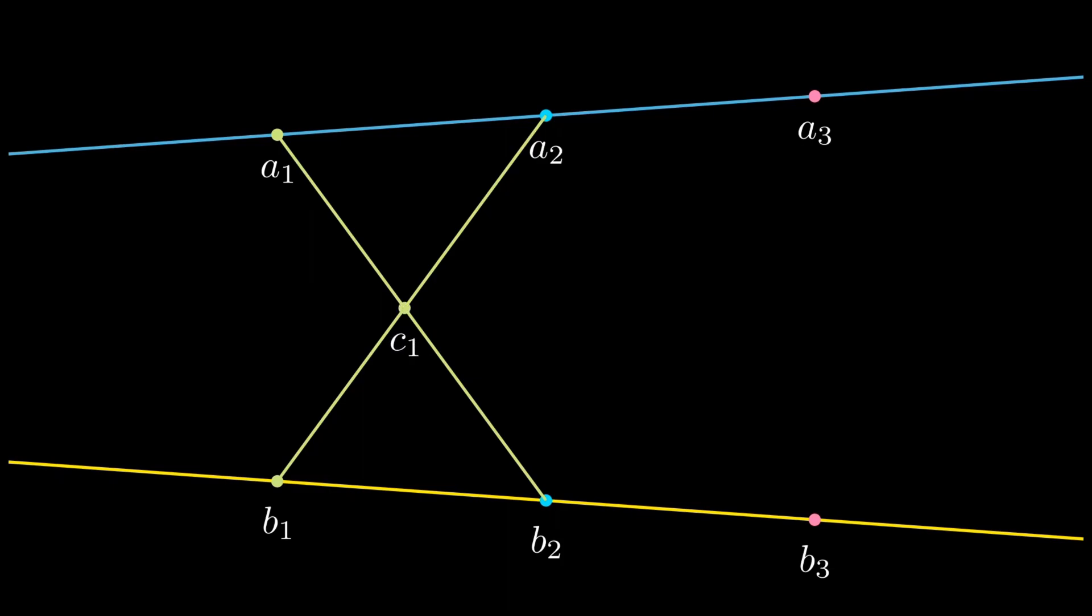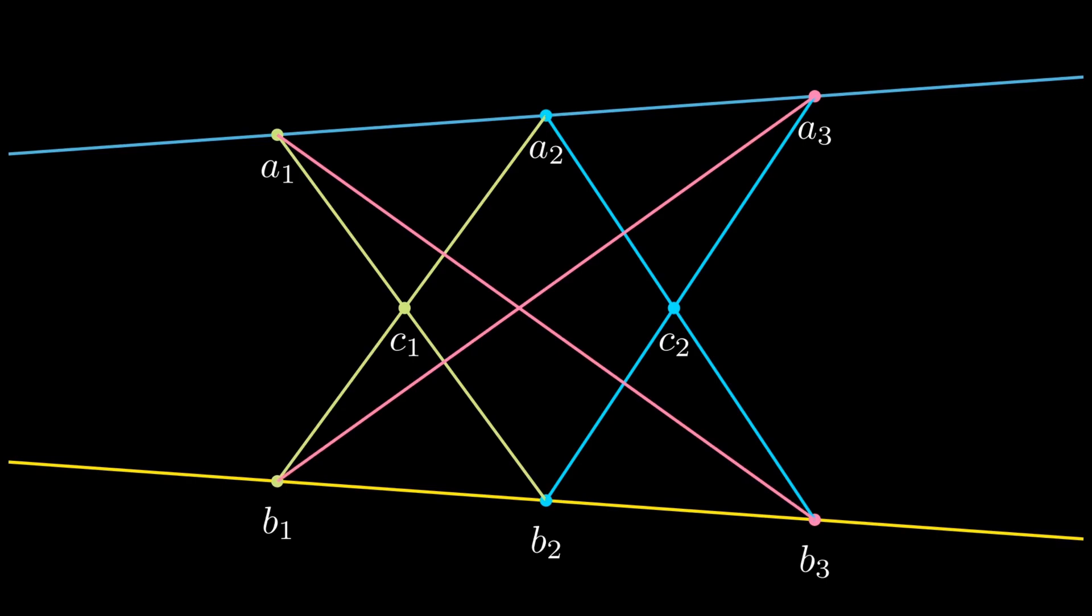Let's join a1b2 and a2b1. Suppose the intersection point is c1. Similarly, let's join a2b3 and a3b2. The intersection point is c2. And finally we join a1b3 and a3b1. The intersection point is c3.